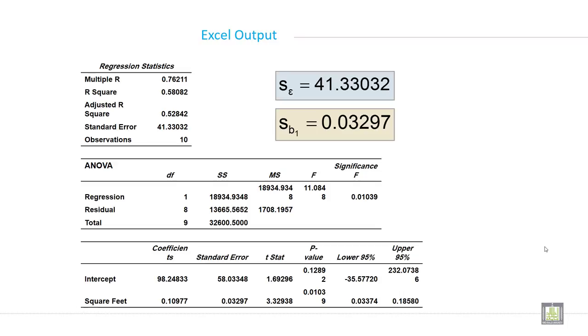So here SE is 41.33032. This is SE and SBI is 0.03297. This is SBI. This is the Excel output and SE and SBI you can calculate by this way.